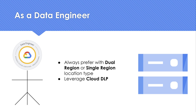Or go with a single region — something like Mumbai, Singapore, or London — that is going to be a good choice. When we have a multi-region location type, the data is going to get replicated and there are chances that the data is going to leave the country, creating compliance issues. When you're loading data from Google Cloud Storage into BigQuery using it as a source, such as an external BigQuery table, Google prefers you to use dual region or single region — it's a must as a data engineer. Since lots of sensitive data can come in, turning on DLP is going to be a very important choice.